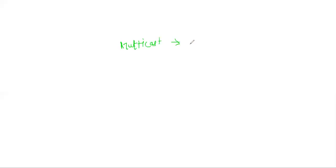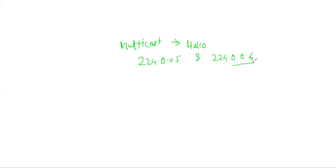Updates are sent by multicast. OSPF is the only protocol that has two multicast IP addresses. The first multicast IP address is 224.0.0.5 and the second is 224.0.0.6. These two multicast IP addresses are related to the DR and BDR concept — this will be explained properly when we cover the DR and BDR topic in the future.